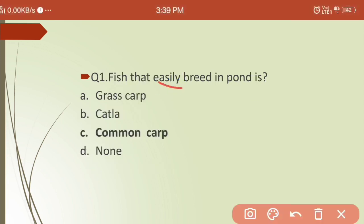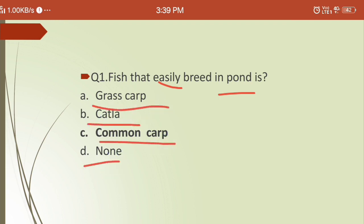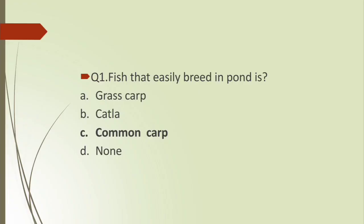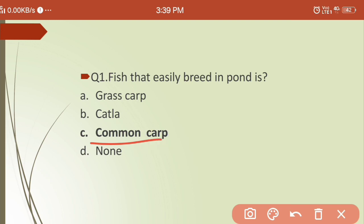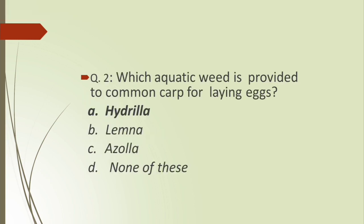First question: which fish easily breeds in a pond? Options are: (a) grass carp, (b) katla, (c) common carp, (d) none. The answer is common carp, because it is a hardy fish and can breed in any condition, whereas grass carp and katla need favorable conditions for breeding.